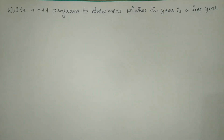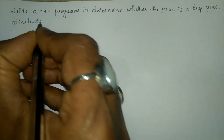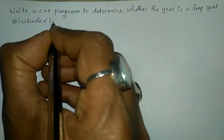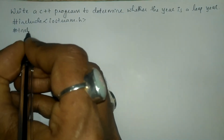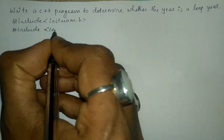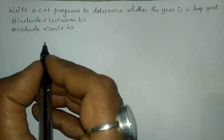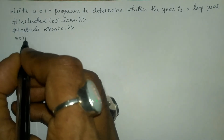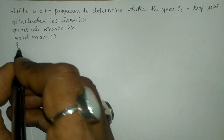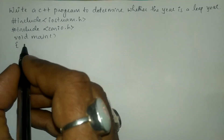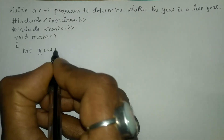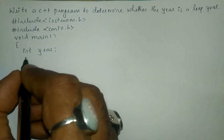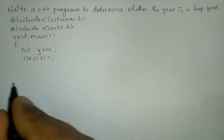Now let us write the actual program by writing the preprocessor directives: #include with angular brace and iostream.h header file. The next preprocessor directive is #include with angular brace for conio.h header file. Now let us write the void main function with a curly open brace, and in the declaration section I am going to declare a variable called int year and then put a semicolon.